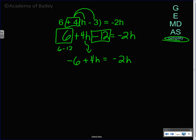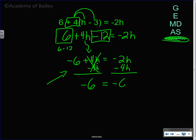Trying to get h by itself, we have to move the variables to one side and the numbers without variables to the other side. Since negative 6 does not have a variable, we're going to move that positive 4h. The opposite of positive 4h is negative 4h. Subtract 4h from negative 2h on the left side, drop down negative 6, and on the right side you have negative 2h minus 4h. They are like terms.